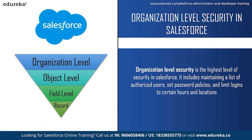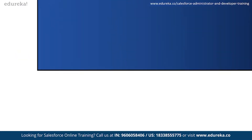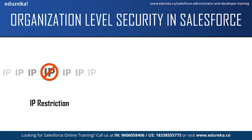Organization level security lets you decide when and from where users can access the system, securing data from unauthorized users. Key features include IP restriction, password policies, and login access. Using trusted IP ranges, you can limit users' ability to log in only when they are in the office. If they attempt to log in from outside trusted ranges, they may be asked for two-factor authentication via a code sent to their mobile device. IP restriction can be set on individual user profiles or a group of profiles.